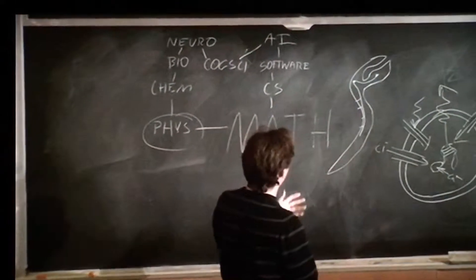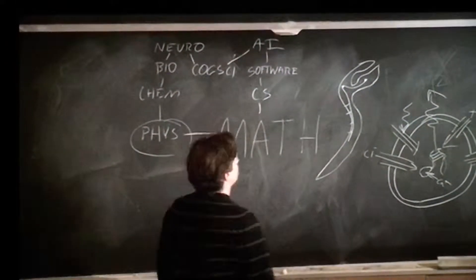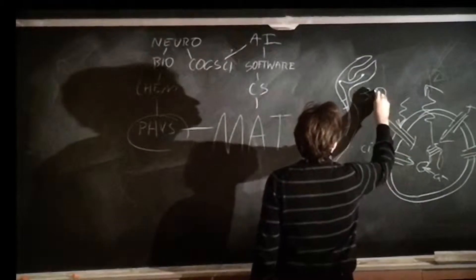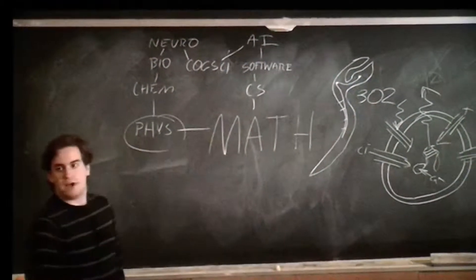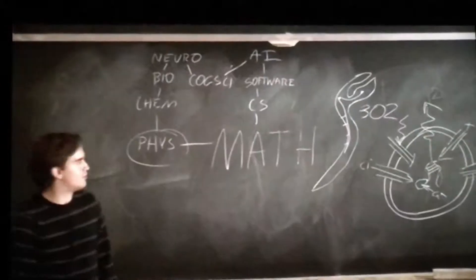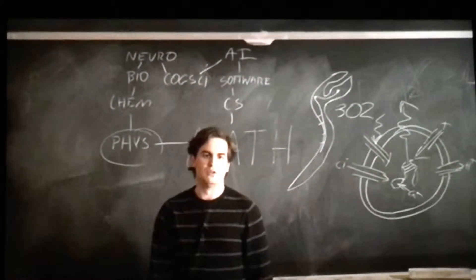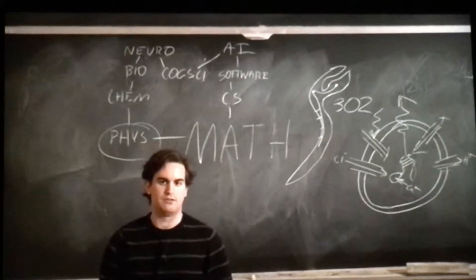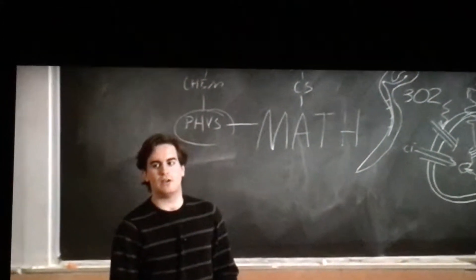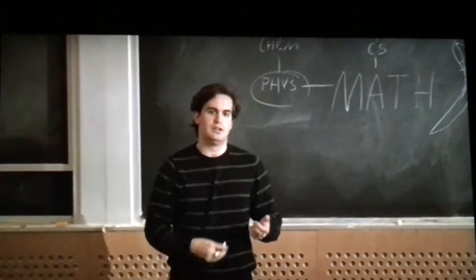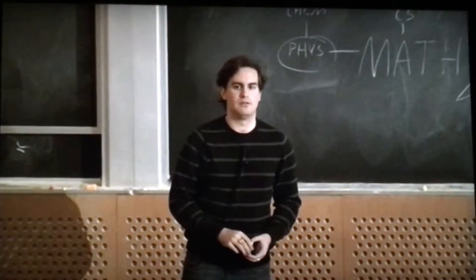But since we know where all the neurons are—only 302 of them—it's not crazy to think about using these biophysical techniques to build a model pairwise, if needed, of all 90,000 pairs of how every neuron affects every other neuron.